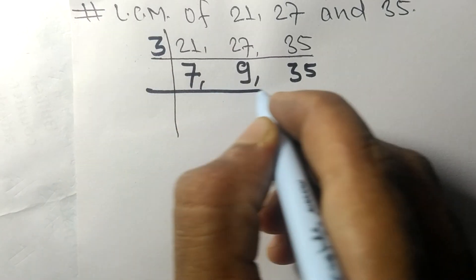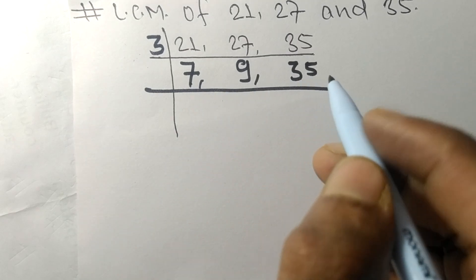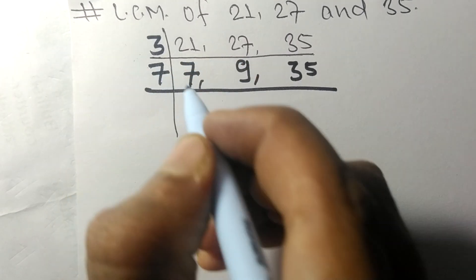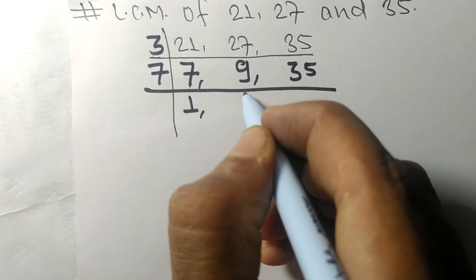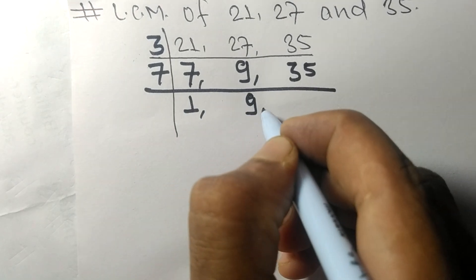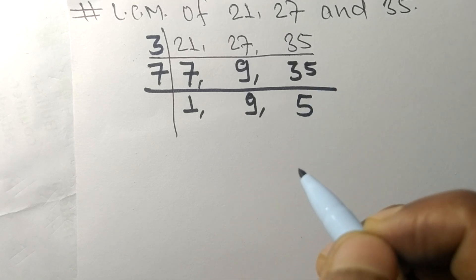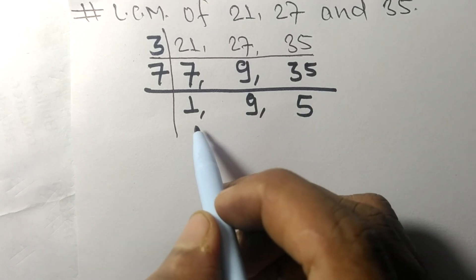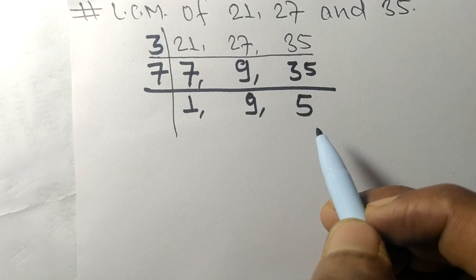Now 7 and 35 are divisible by 7. 7 times 1 makes 7, 9 is not divisible so it remains the same, and 7 times 5 makes 35. Now these numbers 1, 9, and 5 are not exactly divisible by the same number.